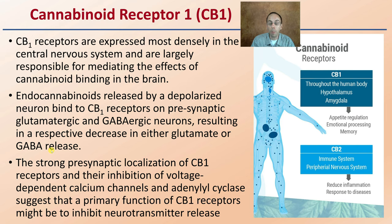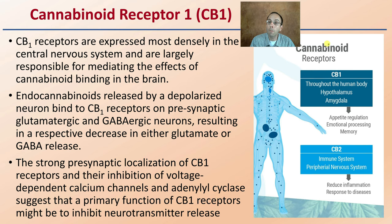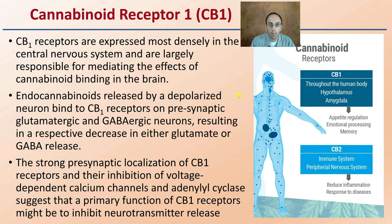The strong presynaptic localization of CB1 receptors and their inhibition of voltage-dependent calcium channels and adenylyl cyclase suggests that the primary function of CB1 receptors might be to inhibit neurotransmitter release. Inhibiting neurotransmitter release may not necessarily always be a bad thing. CB1 is found throughout the human body, particularly in the hypothalamus, and is related to memory, appetite regulation, and emotional processing.